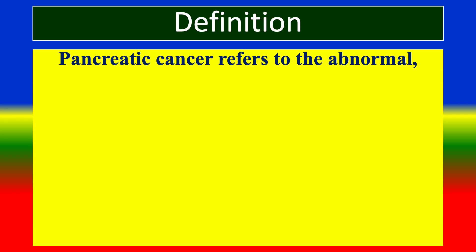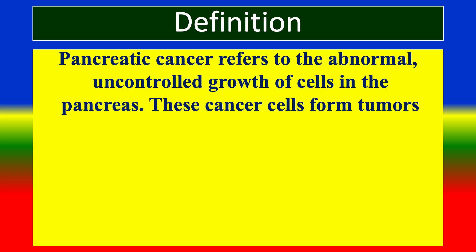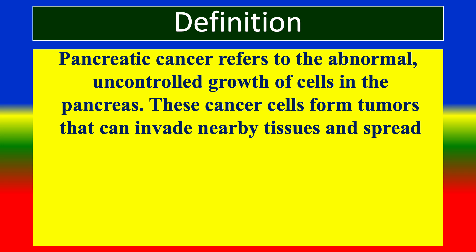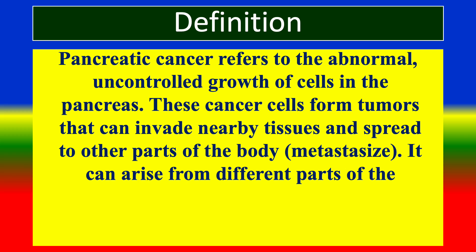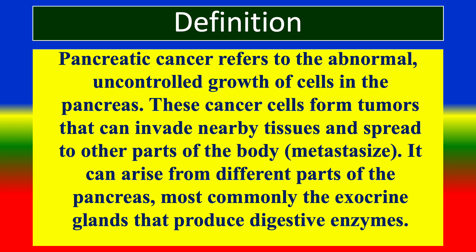Pancreatic cancer refers to the abnormal, uncontrolled growth of cells in the pancreas. The cancer cells form tumors that can invade nearby tissues and spread to other parts of the body. It can arise from different parts of the pancreas, most commonly the exocrine glands that produce digestive enzymes.